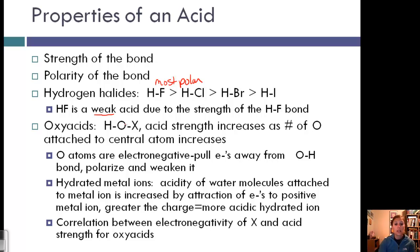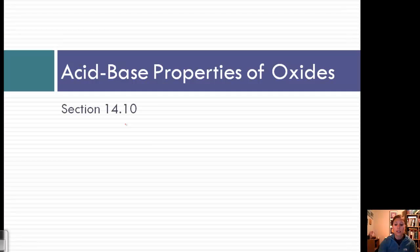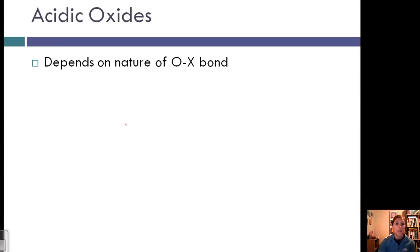There is a correlation between electronegativity of X and acid strength for oxyacids. That's what we're going to look at next in section 14.10 - acidic oxides that depend on the nature of the O-X bond. Remember the general form H-O-X.